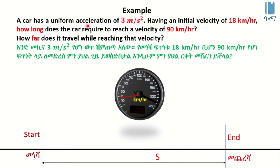Let's look at this example. A car has a uniform acceleration of 3 m per second squared, having an initial velocity of 18 km per hour. How long does the car require to reach a velocity of 90 km per hour?